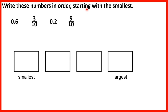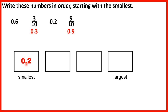Write these numbers in order starting with the smallest. We have 0.6, 3 tenths, 0.2, and 9 tenths. We have some decimals and some numbers written as fractions, but we can change fractions to decimals, because the first digit after the decimal point tells us how many tenths we have. So 3 tenths is the same as 0.3, and 9 tenths is the same as 0.9. So in order: 0.2 is the smallest, then 0.3 (written as 3 tenths), then 0.6, and the largest is 0.9, which is the same as 9 tenths.